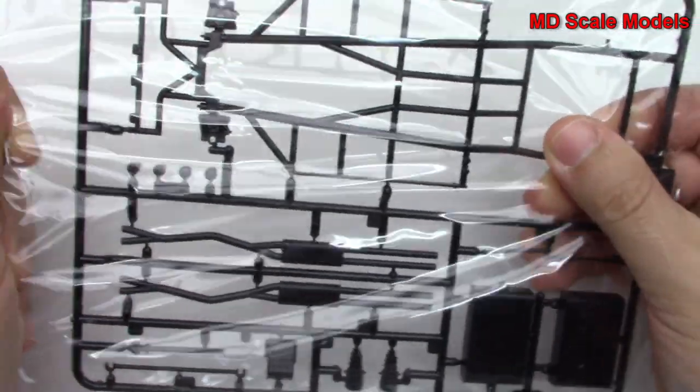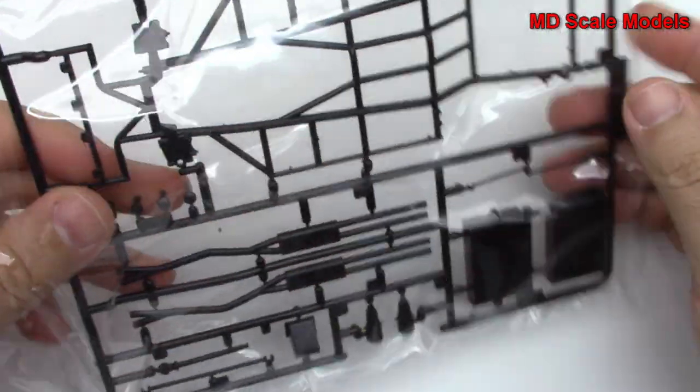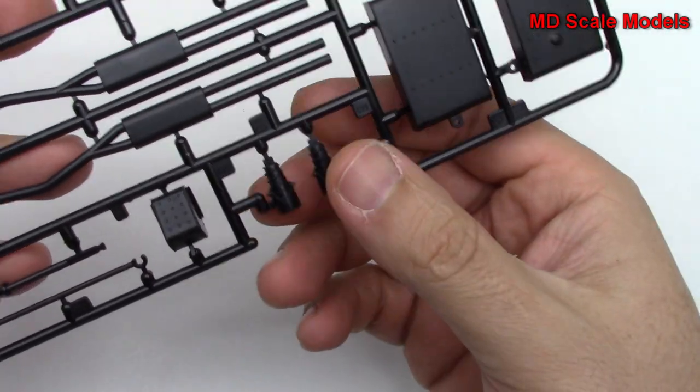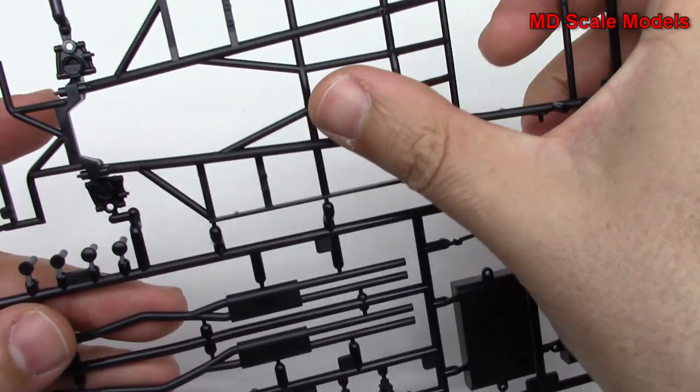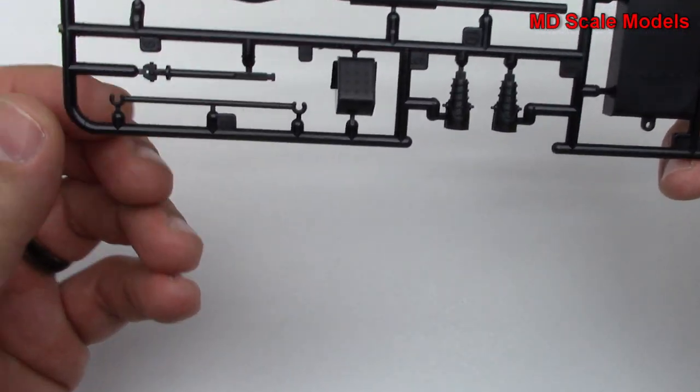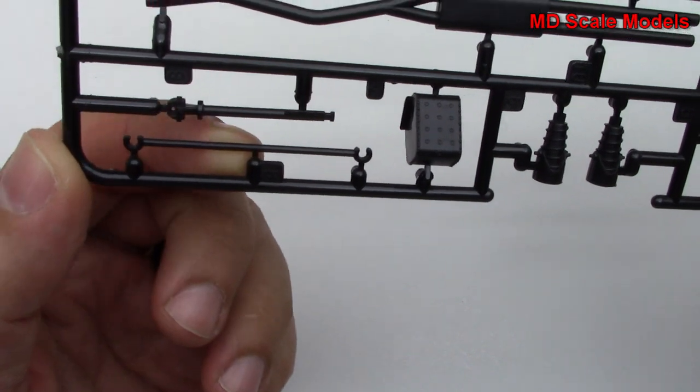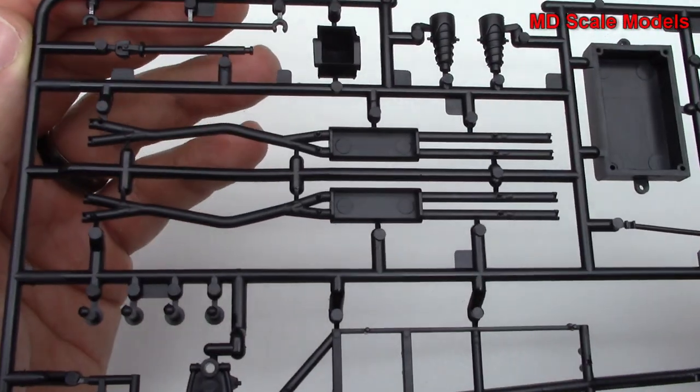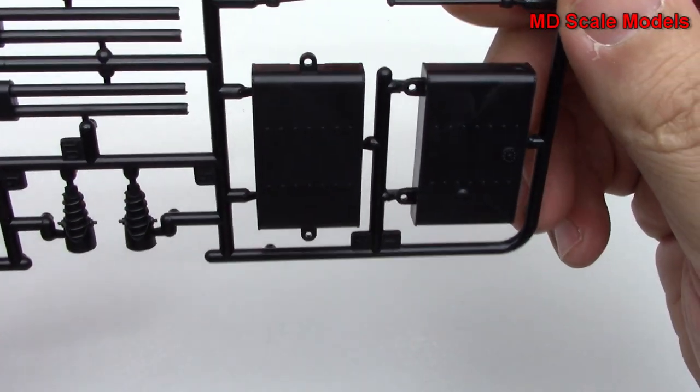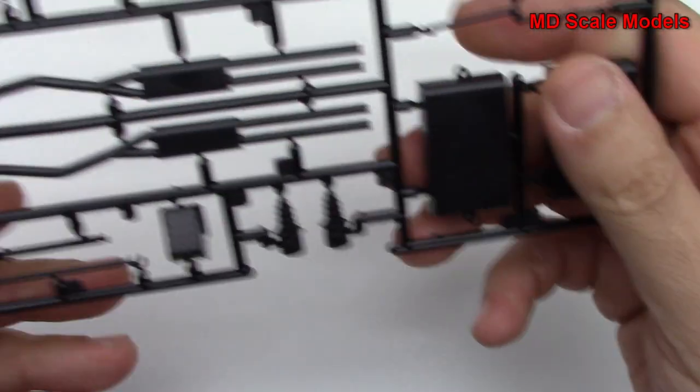Let's have a look at this last black sprue here. Looks like here we have our exhaust mufflers, our subframe and the chassis, our steering rack there and steering column, and maybe fuel tanks there.